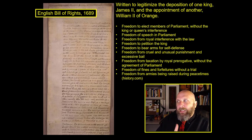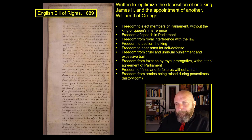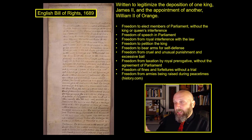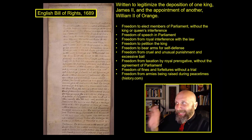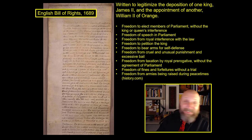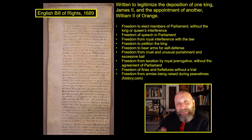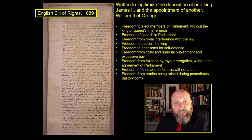Even though the English Bill of Rights was written the year before the publication of Two Treatises, there is a lot of John Locke in it. The entire legitimacy behind the deposition of James II and the election of William of Orange is the logic of John Locke. So John Locke's logic is heavily involved in the English Bill of Rights of 1689 — that's the first of the six founding documents.